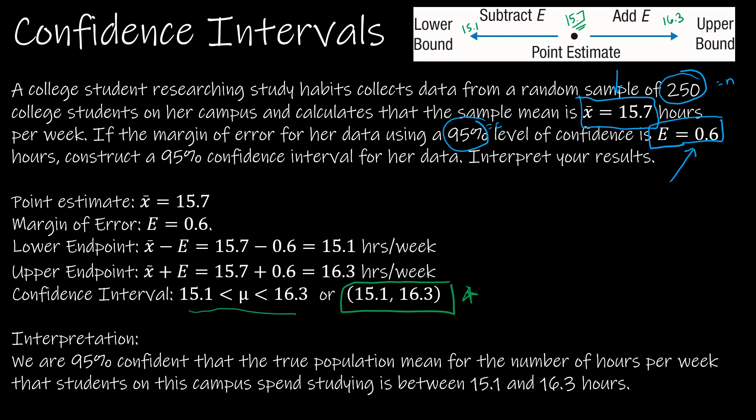The interpretation is that we are 95% confident that the true population mean for the number of hours per week that students on this campus spend studying is between 15.1 hours and 16.3 hours. So again, what we're saying is we don't know the actual mean of the entire population of college students, but based on our sample, we think it's somewhere between these two values.